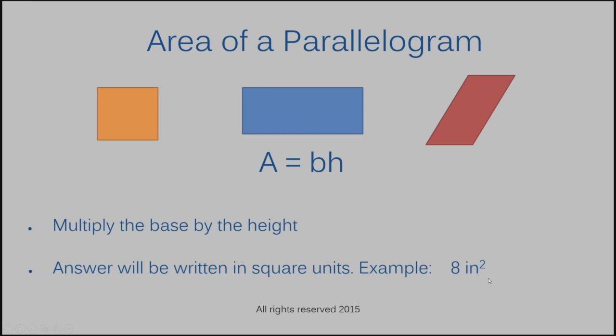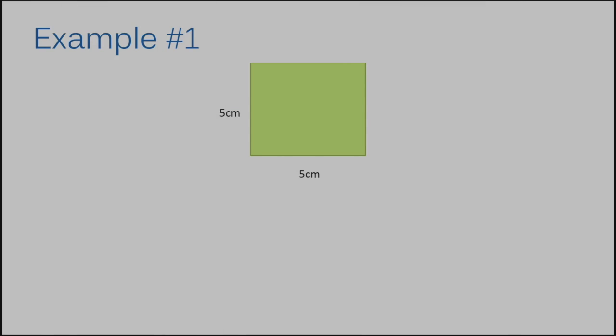Let's move on to example number one. Example number one wants us to find the area of this square. The reason I know it's a square right off is because it pretty much looks like a square, but also because of the dimensions that we have.